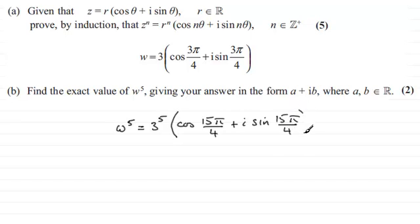And if you get on your calculator, assuming you're working in radians mode, you'd find that 3 to the power 5 is 243, and the cosine of 15π over 4 is 1 over root 2. And then here you have got the sine of 15π over 4 is minus 1 over root 2, so you've got minus 1 over root 2 times i.